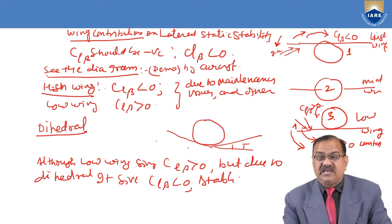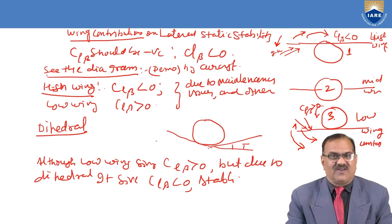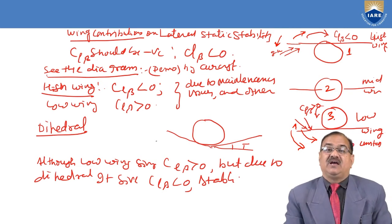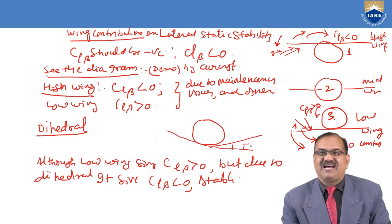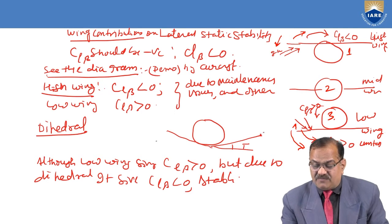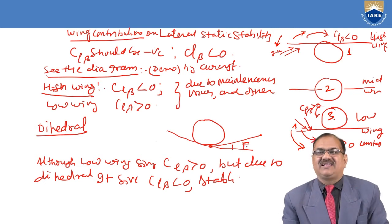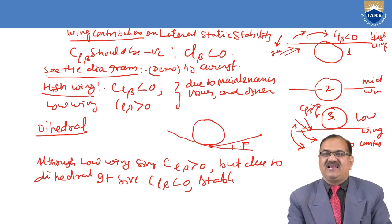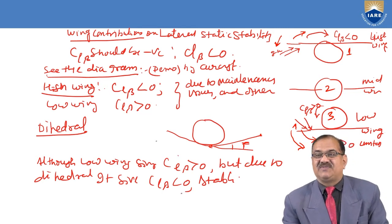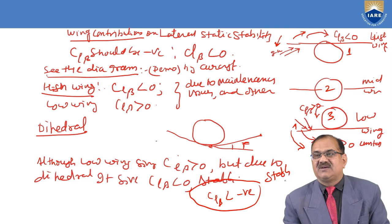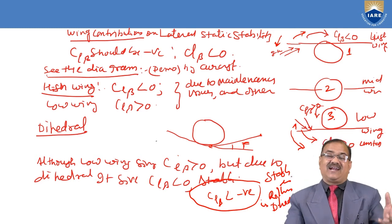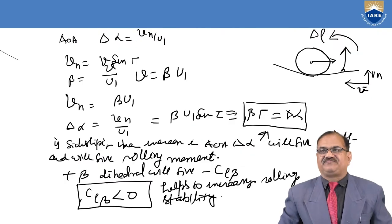Next is the dihedral effect. If your wings are low winger, how can you get lateral stability? In that case, you have to make the dihedral — meaning the tip of the wing is above the root of the wing. The angle gamma is called the dihedral angle. If you make the dihedral angle, although it is a low-wing aircraft, CL beta can be made negative. So your aircraft will be stable in rolling if there is a dihedral. This dihedral increases the aircraft rolling static stability.